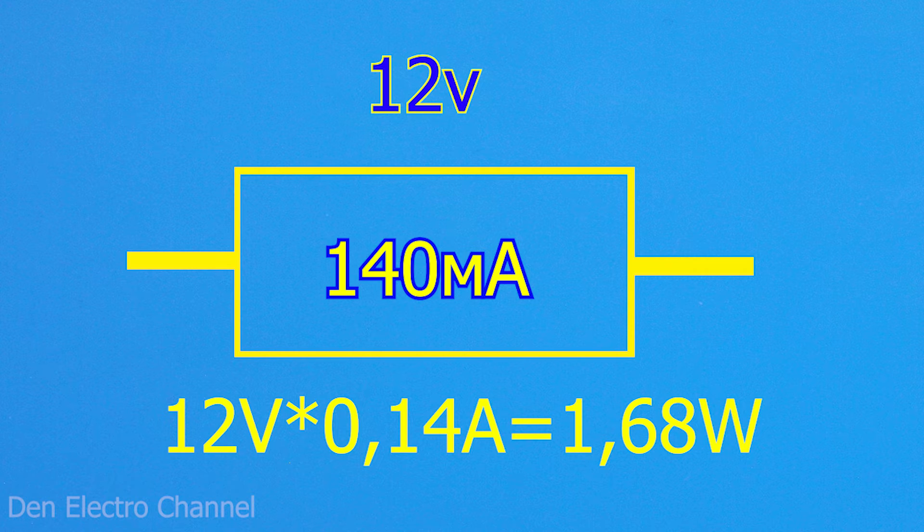This works out to be 1.68 watts dissipated across the resistor. It is dissipated in the resistor as heat. That's quite a lot of power. If you take a resistor thoughtlessly, it can overheat and burn out.